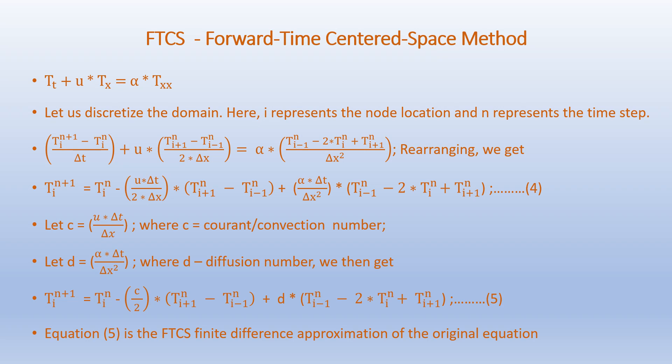In the Forward Time Centered Space (FTCS) method, we discretize the 1D advection-diffusion equation T_t plus u·T_x equals alpha·T_xx as: (T_i^{n+1} minus T_i^n) over delta_t plus u times (T_{i+1}^n minus T_{i-1}^n) over 2·delta_x equals alpha times (T_{i-1}^n minus 2·T_i^n plus T_{i+1}^n) over delta_x squared.